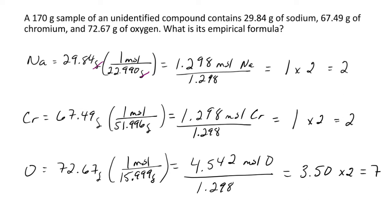And 2 for sodium. Using these numbers for our subscripts, the empirical formula is Na2Cr2O7. As always, thank you for watching.